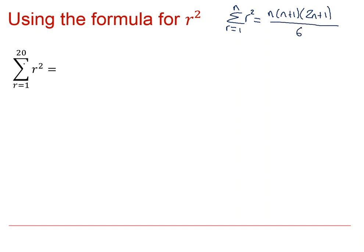Okay, so here we're doing the sum from 1 to 20 of r squared, so that is going to be 20 times n plus 1, which is 21, times 2n plus 1, which is 41, all divided by 6, which is 2,870. Fairly straightforward.